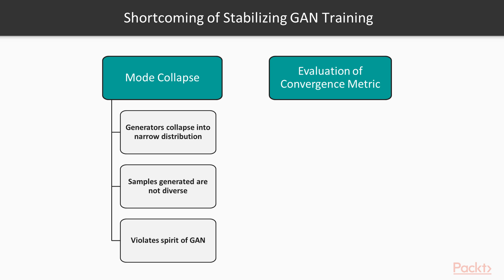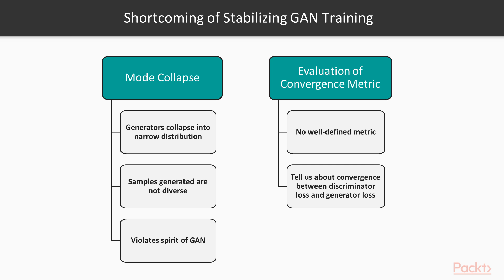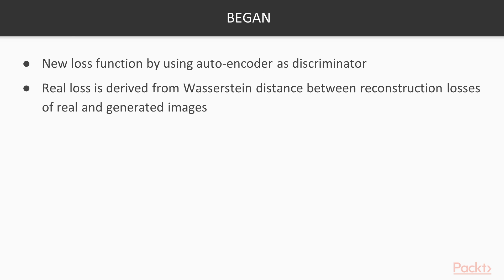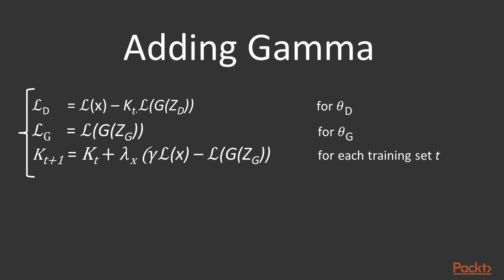In evaluation of convergence metrics, there is no well-defined metric that tells us about the convergence between discriminator loss and generator loss. The improved Wasserstein GAN is a newly proposed algorithm that promises to solve these problems by minimizing the Wasserstein distance, providing simple gradients to the networks — plus one if the output is considered real and minus one if fake. The main idea behind BGAN is to have a new loss function by using an autoencoder as a discriminator, where the real loss is derived from the Wasserstein distance between the reconstruction losses of real and generated images. A hyperparameter GAN is added through the use of a weighting parameter K to give users the power to control the desired diversity.